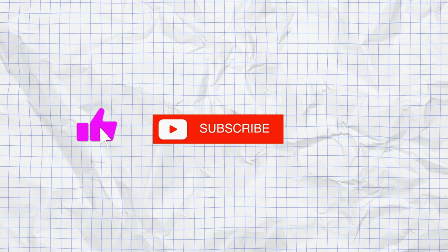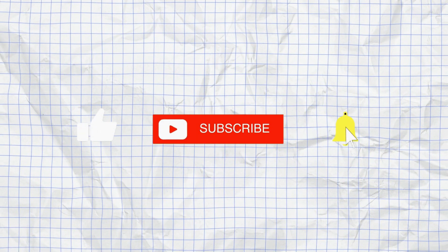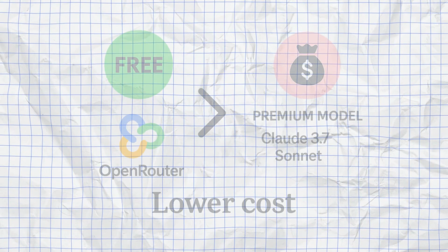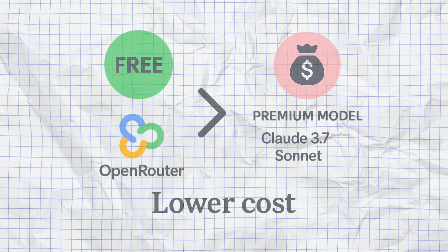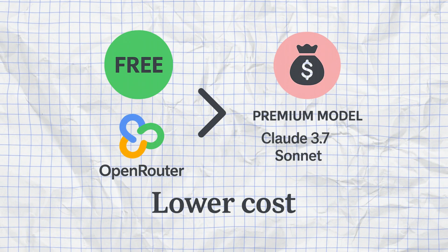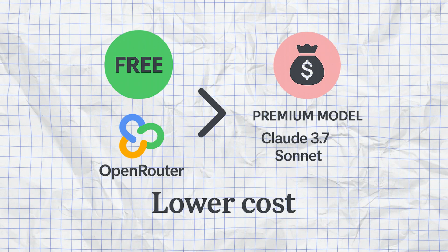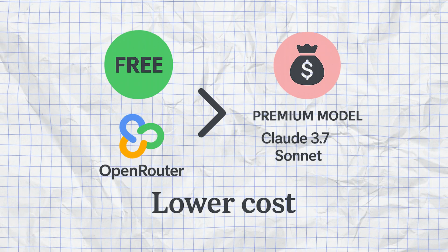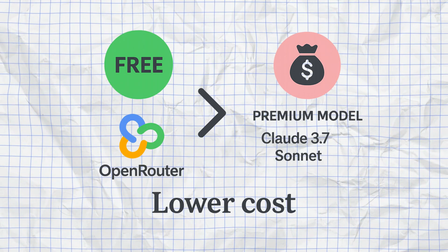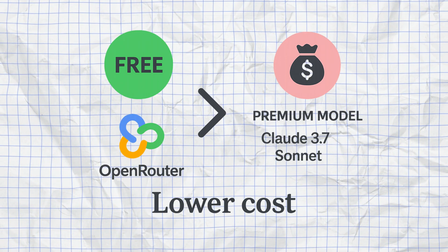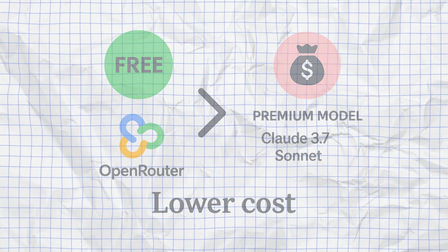Let the numbers speak. Here are the key facts and how it compares to commercial alternatives. First, the costs: it is significantly cheaper, in some cases even available for free via OpenRouter. Premium models like Claude 3.7 Sonnet cost correspondingly more. If you have a limited budget or simply want to experiment without spending much, it's definitely the better choice.